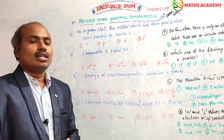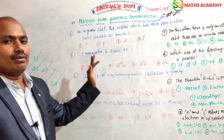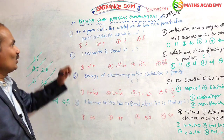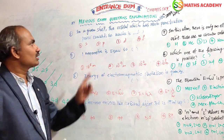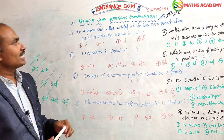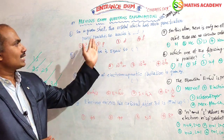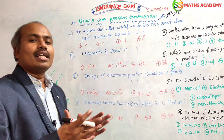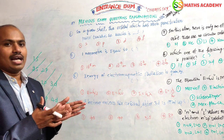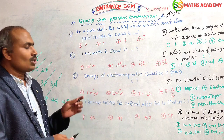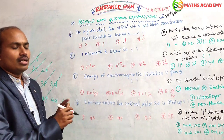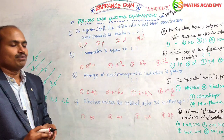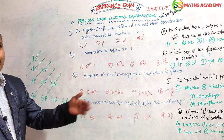Let us now look at some previous exam questions with answers and explanation. The first question: in a given shell, which orbital has more penetration power towards the nucleus? As discussed, the s orbital is closest to the nucleus and has more penetration power. The order is s > p > d > f, so the answer is s.